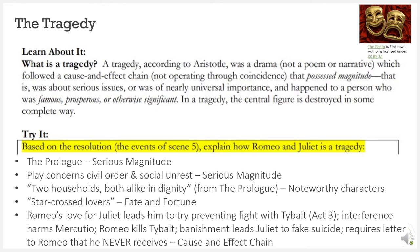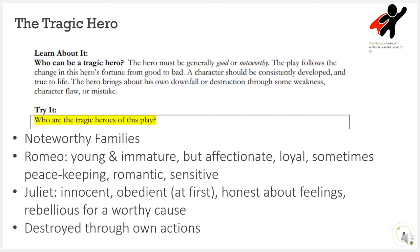The central figure in a tragedy is destroyed in some complete way. After finishing Romeo and Juliet, we know that both central figures completely destroy themselves tragically. A tragic hero must be generally good or noteworthy. The hero's fortune changes from good to bad. This character should be consistently developed over the course of a play, and true to life, meaning that they seem believable. The hero will also bring his or her own downfall or destruction through a weakness, a character flaw, or a mistake. So would you consider Romeo a tragic hero? What about Juliet?